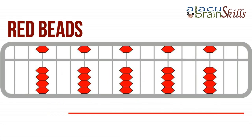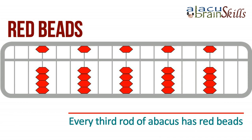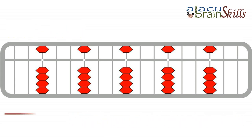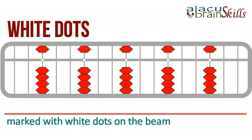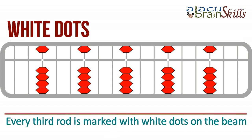Red beads: every third rod of the abacus has red beads. White dots: every third rod is marked with white dots on the beam.